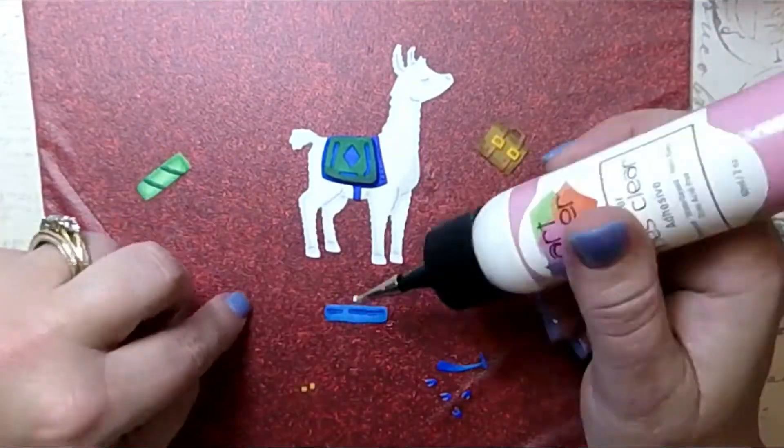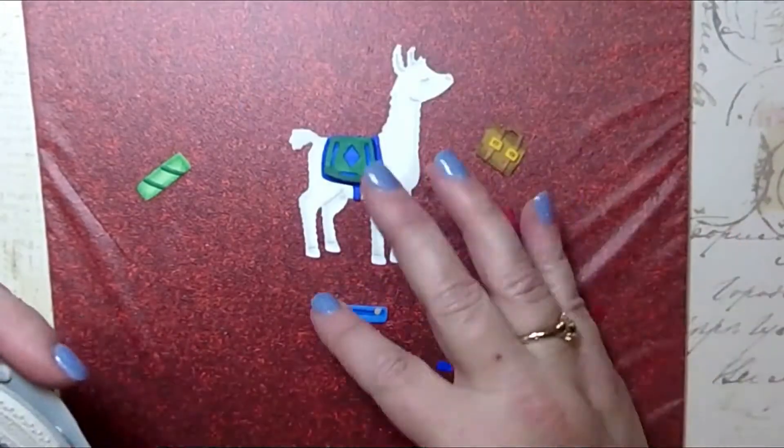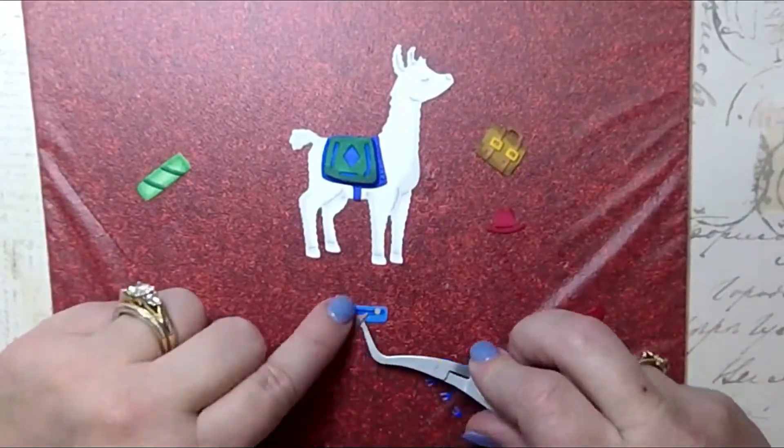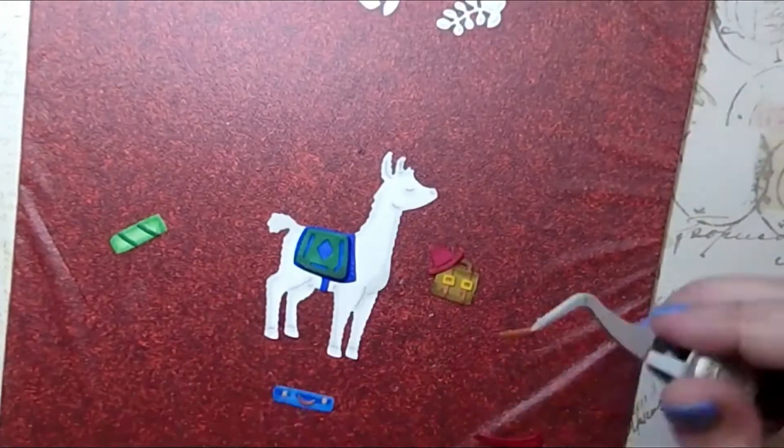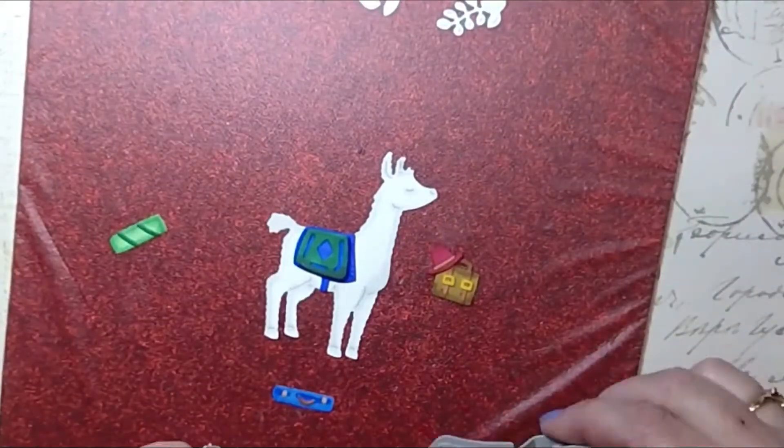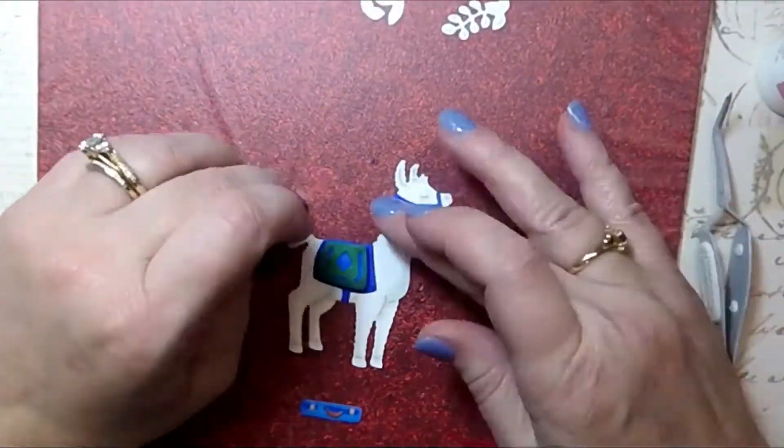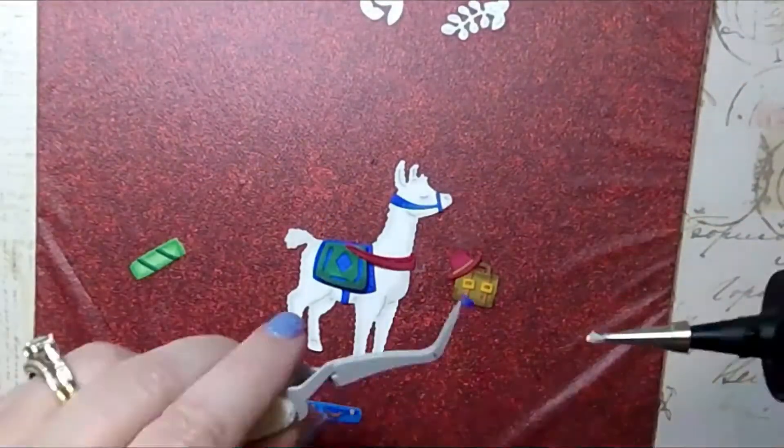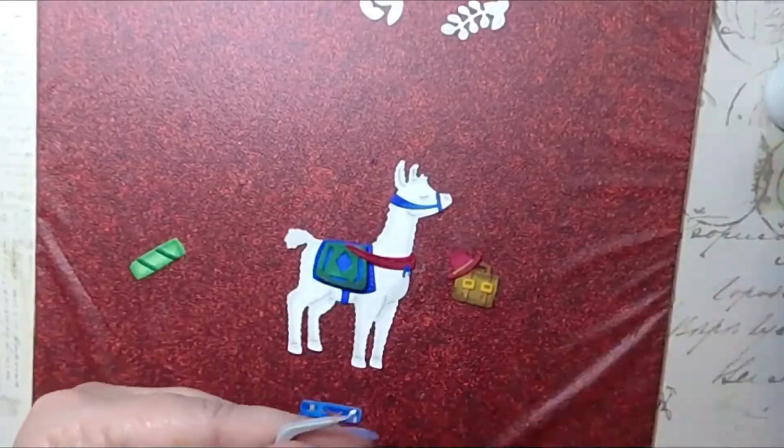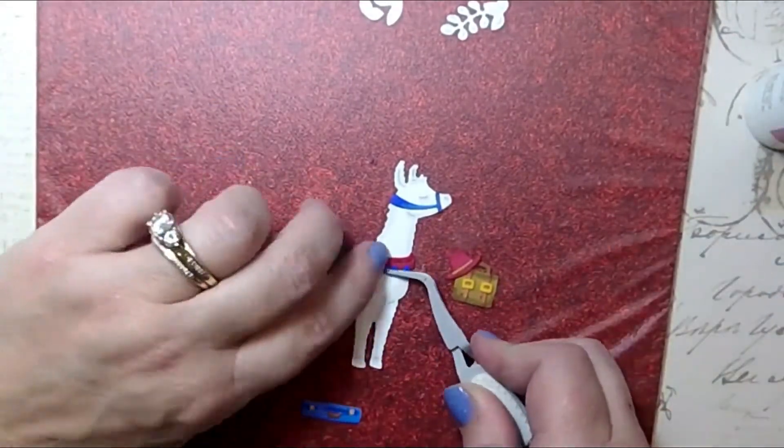This right there in the blue is like a briefcase kind of appearance, and then we've got another kind of traveling case there with buckles and leather straps. I mean, this is an example of all the detail we have. Now the saddle I had used some dimensional dots so that it would stand up.